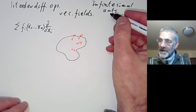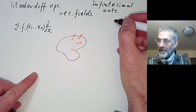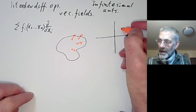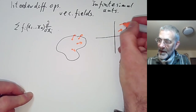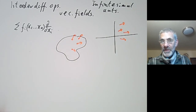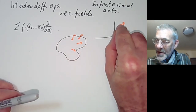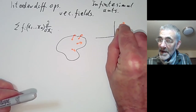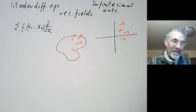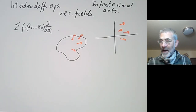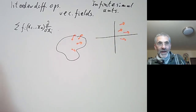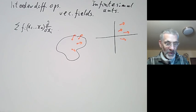We can also think of a vector field as an infinitesimal automorphism. If you've got a vector field on, say, R^2, you can think of it as an infinitesimally small automorphism of R^2 — we just push each point an infinitesimally small amount in the direction of the vector field. Informally, a vector field is sort of like an automorphism that moves everything an infinitely small distance.